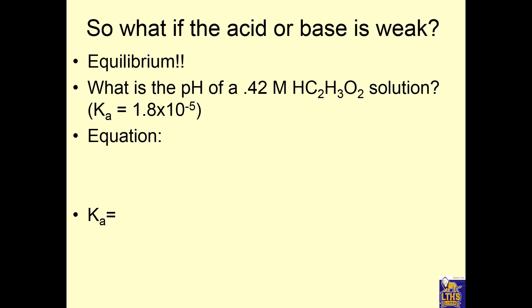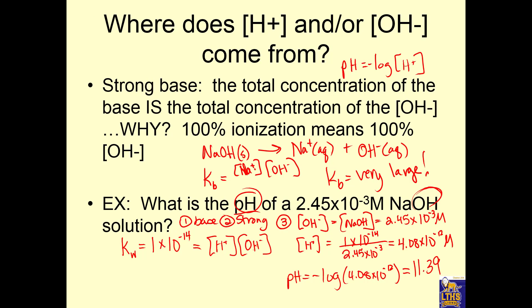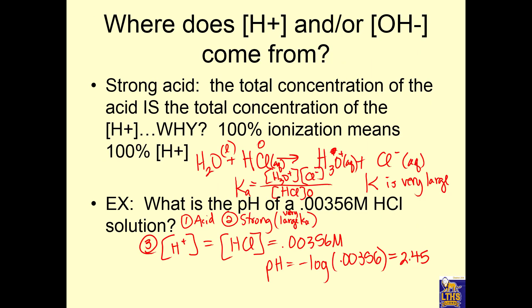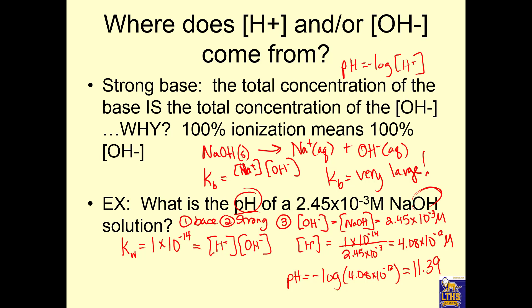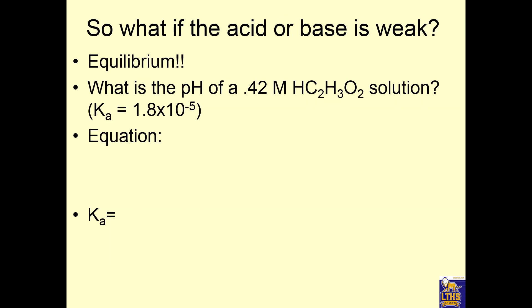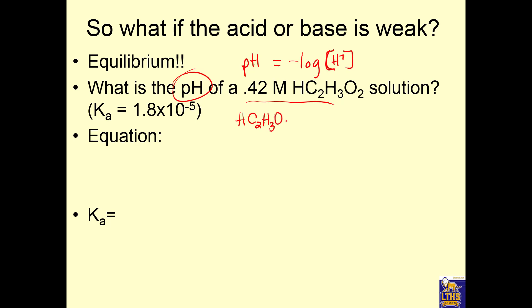That was straightforward because in a strong acid you already know H⁺, and in a strong base you already know OH⁻. What if you have a weak acid? Then you really have equilibrium. I want pH, so I need the negative log of H⁺. Here's my acid: HC₂H₃O₂ aqueous. It's going to dissolve into H⁺ ions and acetate ions.